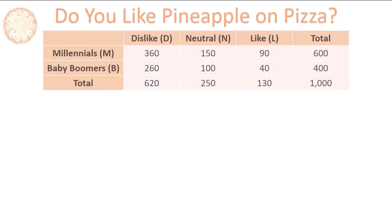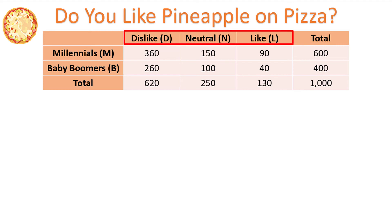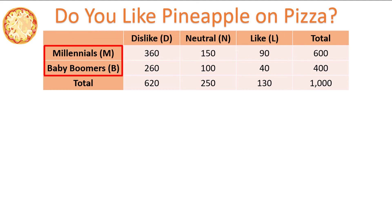A contingency table is a table that shows the distribution of one variable in the columns and a second variable in the rows. For example, consider this contingency table showing Millennials and Baby Boomers' response to the question: Do you like pineapple on pizza? The two variables are the response — either dislike, neutral, or like — and the generation, Millennial or Baby Boomer.